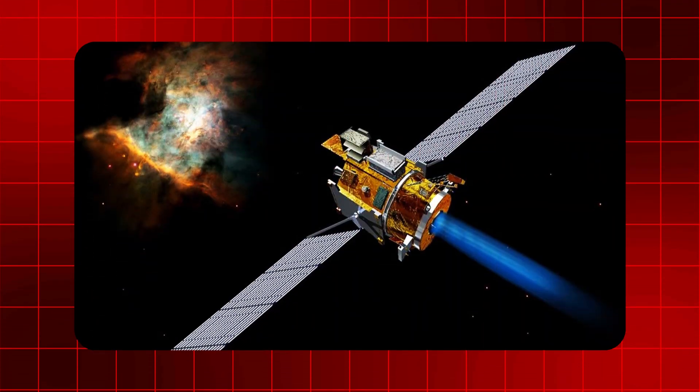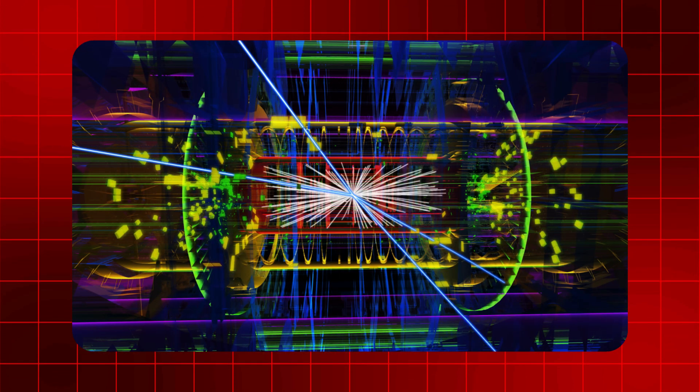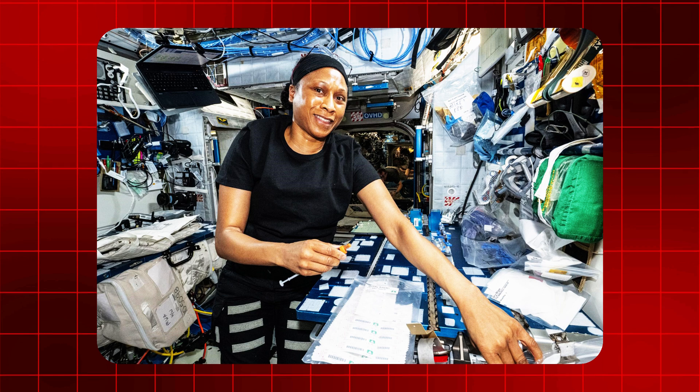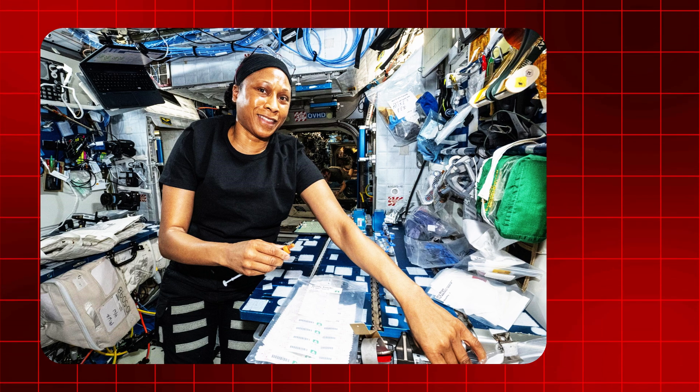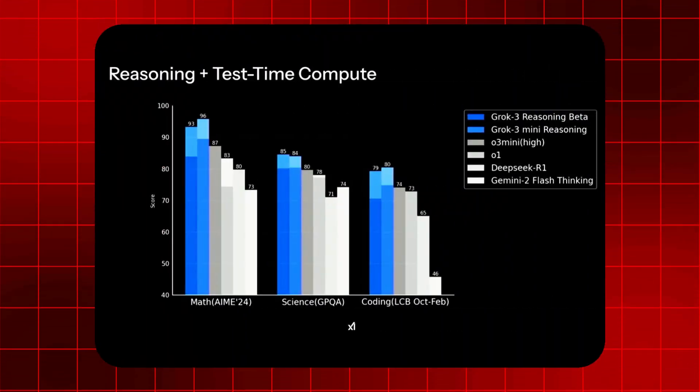Grok 3 was given access to an unprecedented volume of cosmic data, pulling information from NASA's deep space observations and CERN's high-energy physics experiments. While human researchers take years to analyze even a fraction of this data, Grok 3 processed it in mere hours.